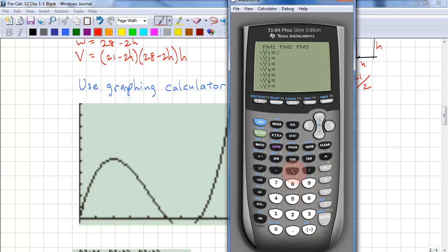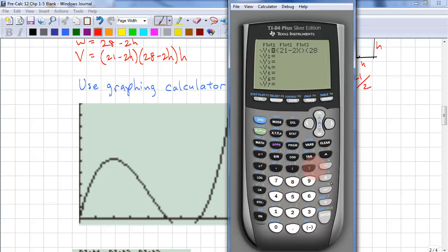So we have 21 minus 2h, but there's no h, so we just use x. 28 minus 2x and x.